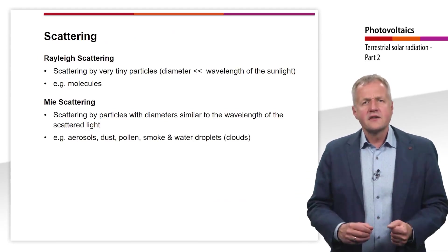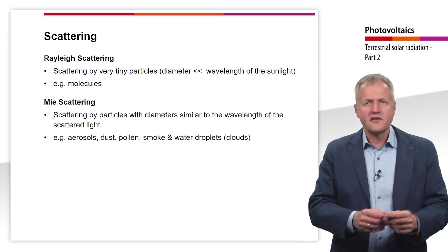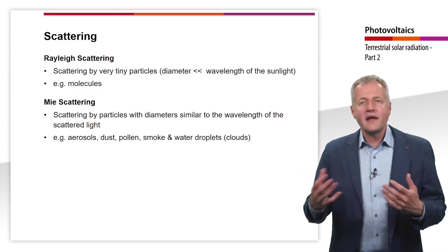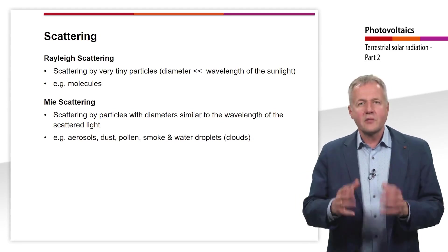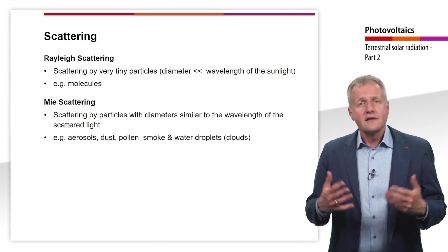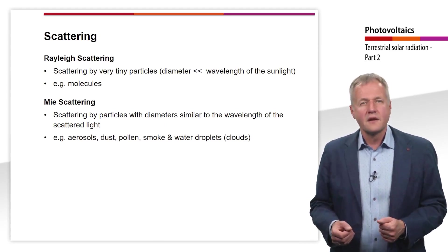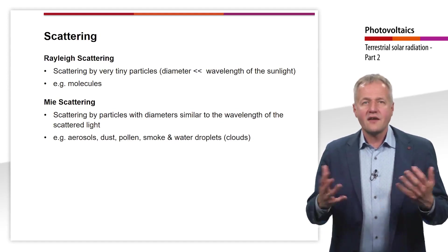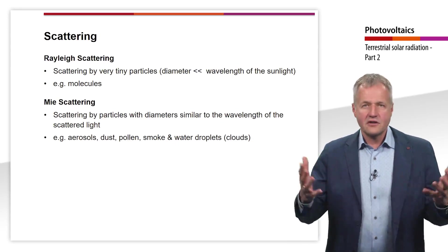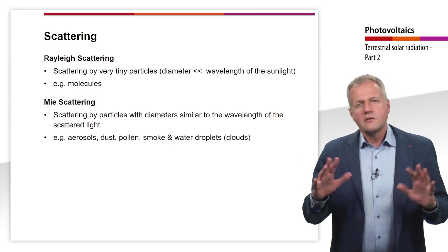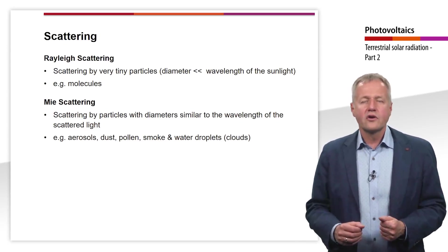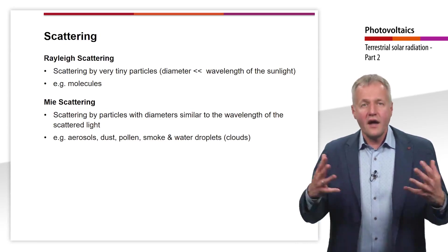Scattering of sunlight can be divided into two major processes: Rayleigh scattering and Mie scattering. Rayleigh scattering takes place when the size of the scattering particles is much smaller than the wavelengths of the light — this is the case for air molecules. Mie scattering takes place when the size of the particles is comparable to the wavelengths of the scattered light. Aerosols, dust, pollen, smoke, and water droplets have these properties.